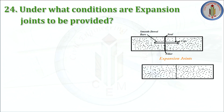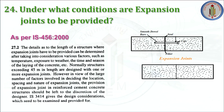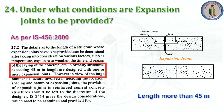Under what conditions are expansion joints to be provided? As per IS 456, it is clearly mentioned that normally, structures exceeding 45 meters in length are designed with one or more expansion joints. So when the length of the building is more than 45 meters, we provide expansion joints.